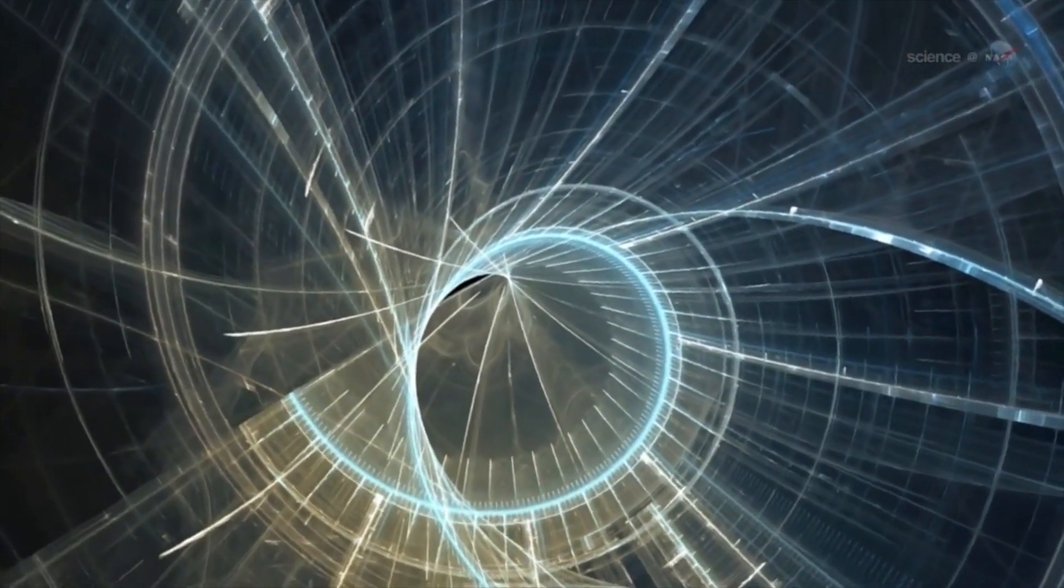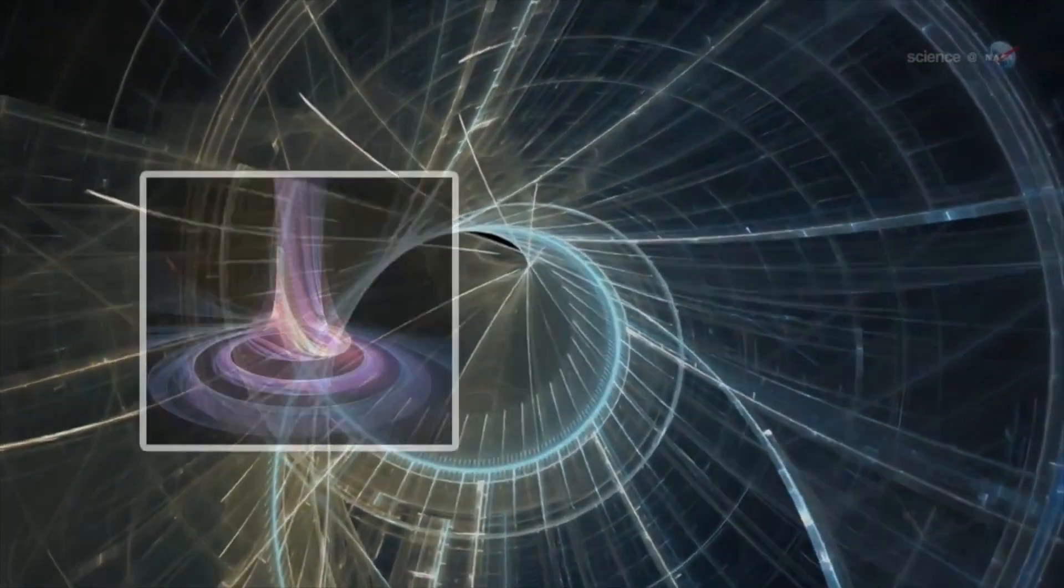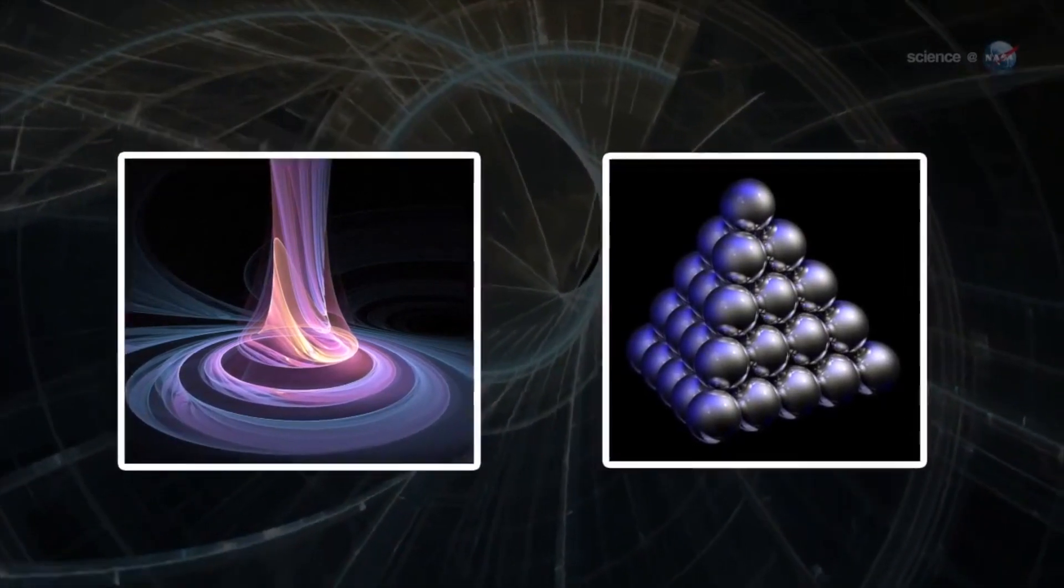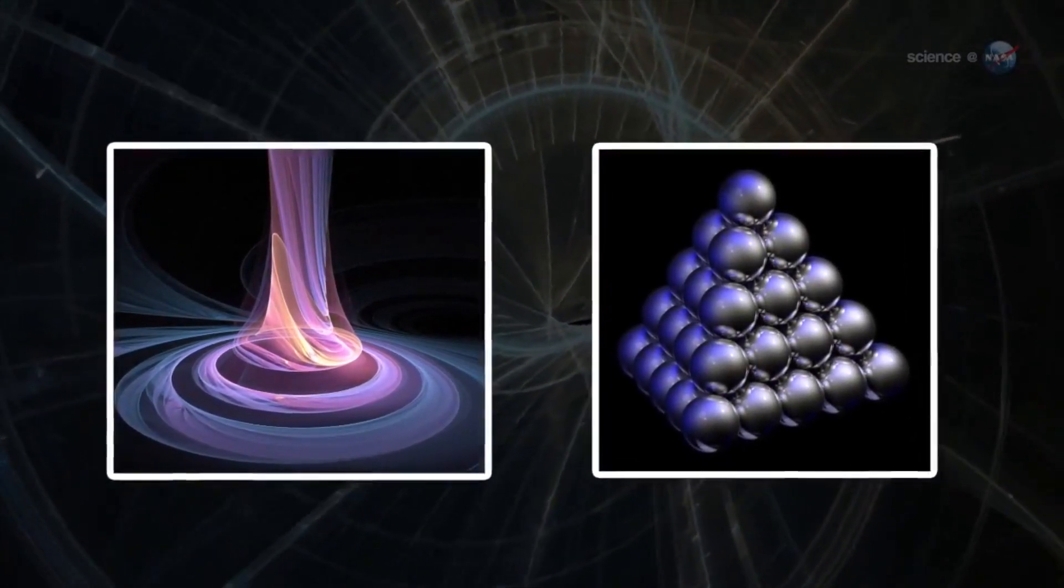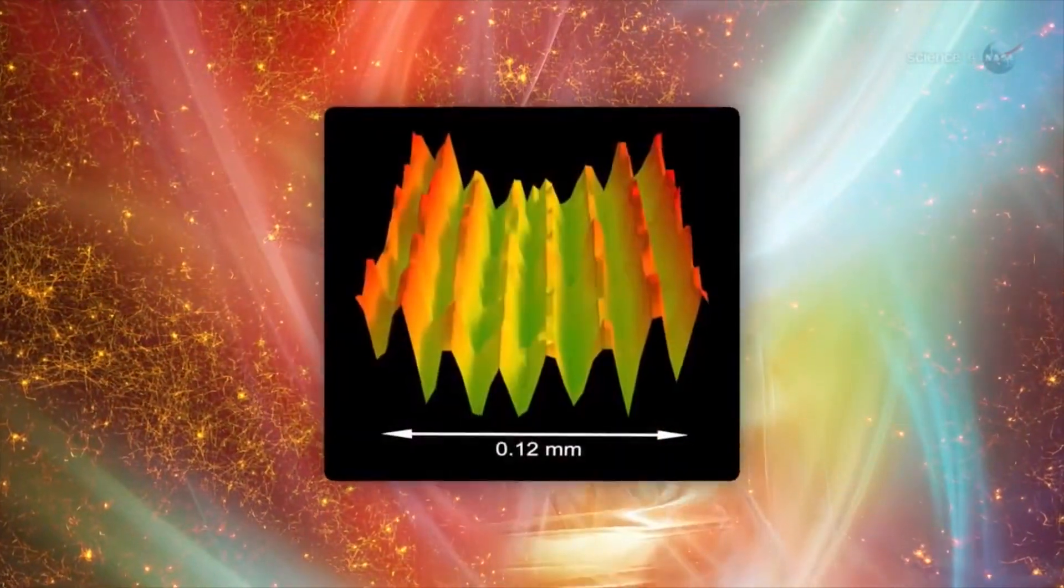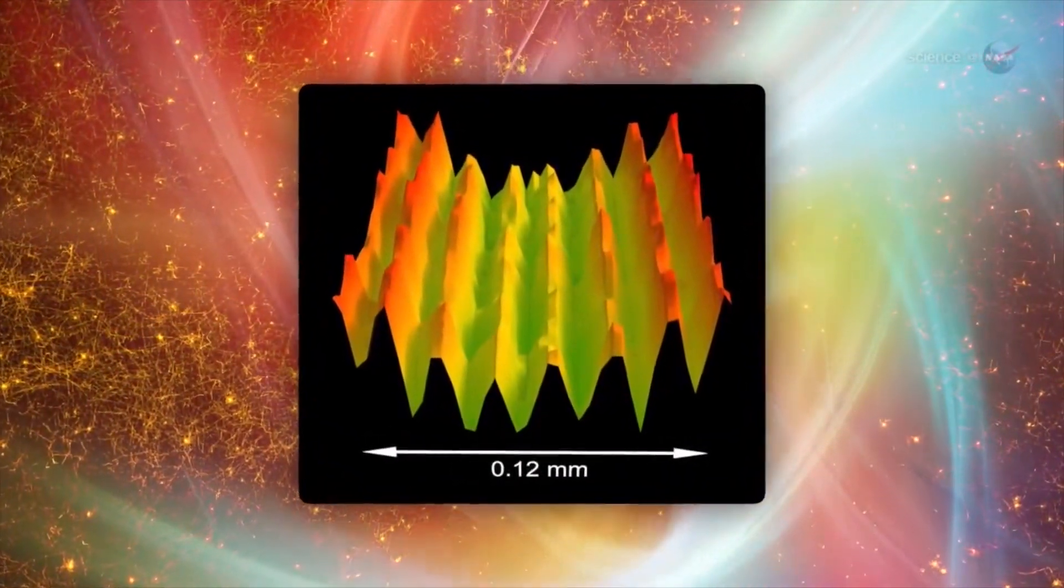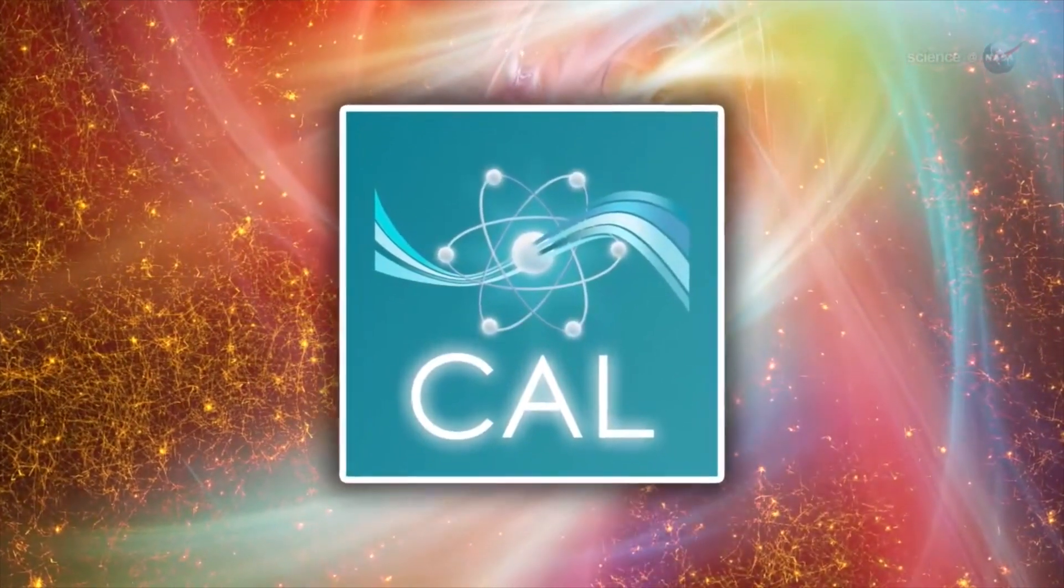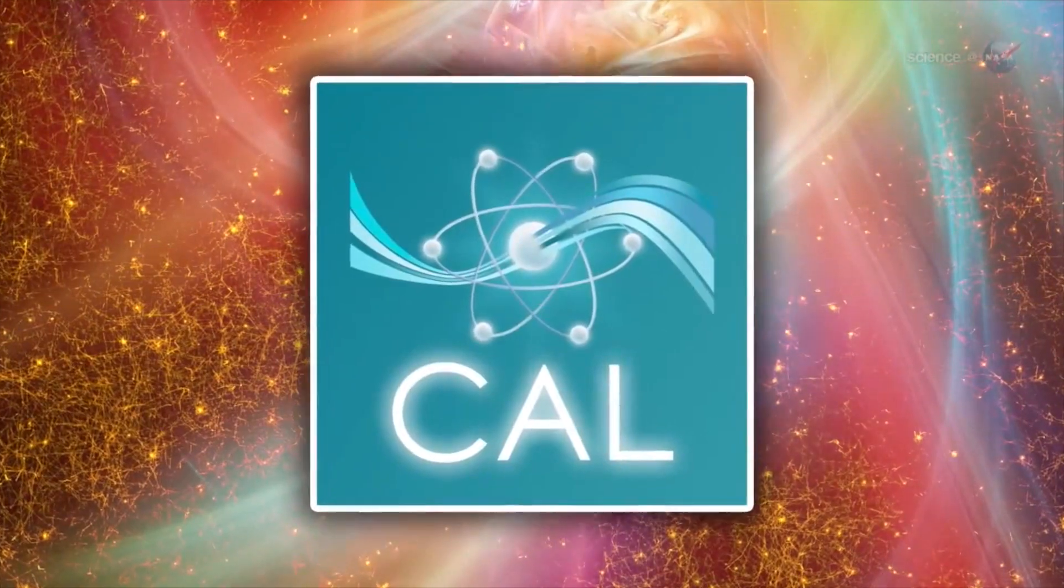Quantum mechanics is a branch of physics that describes the bizarre rules of light and matter on atomic scales. In that realm, matter can be in two places at once. Objects behave as both particles and waves. And nothing is certain. The quantum world runs on probability. It is into this strange realm that researchers using the Cold Atom Lab will plunge.